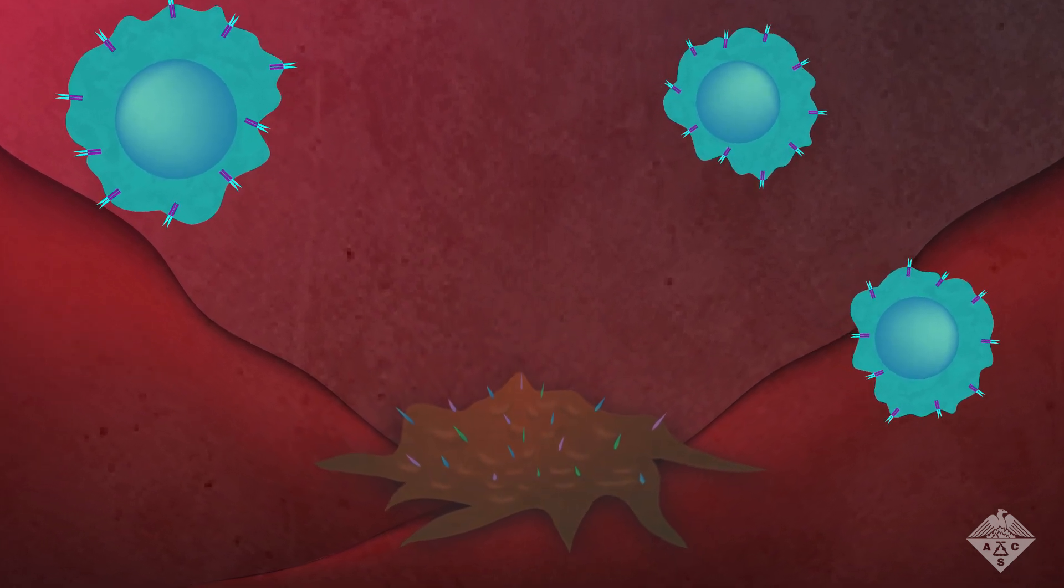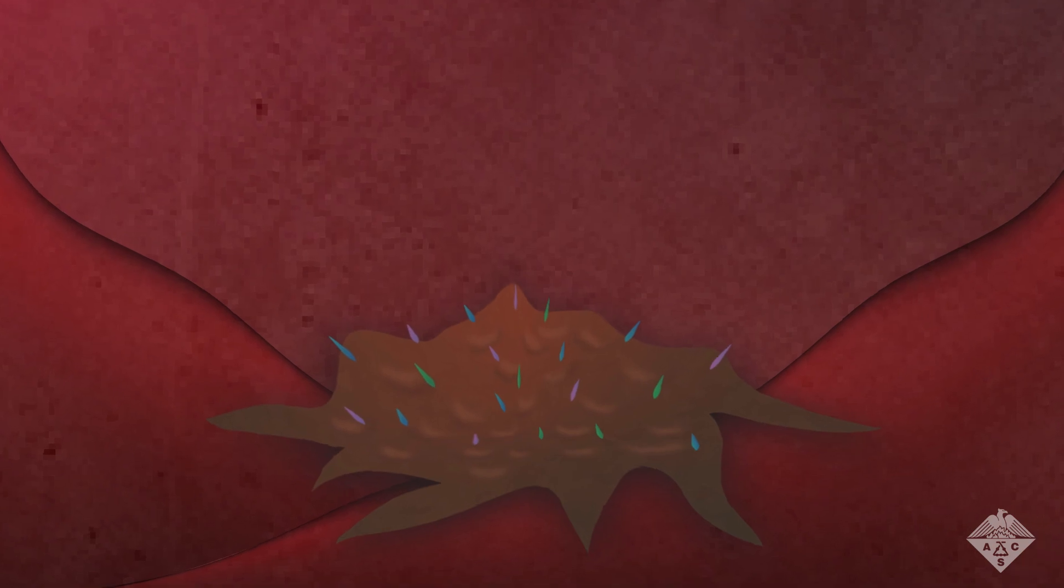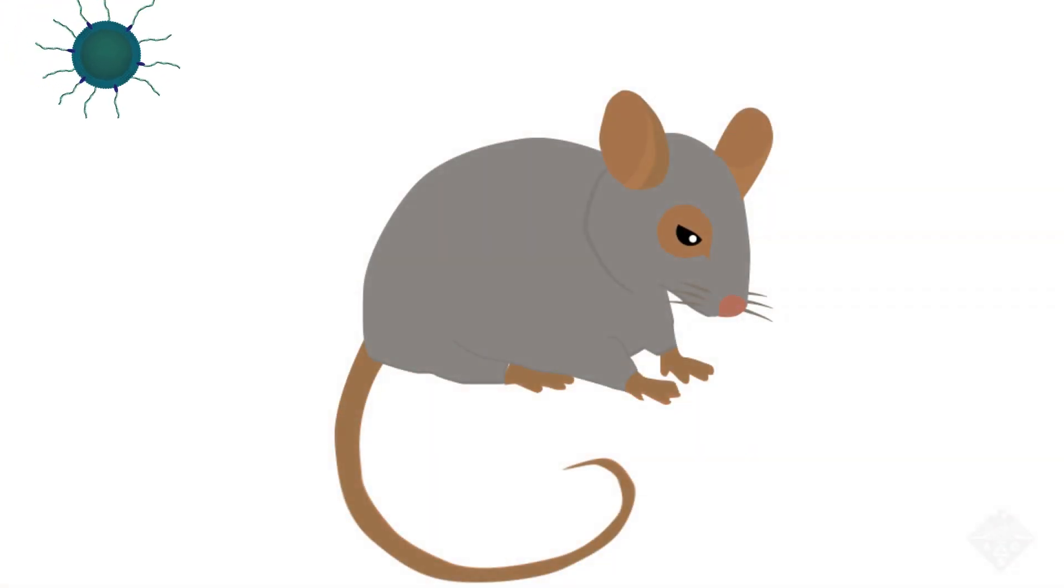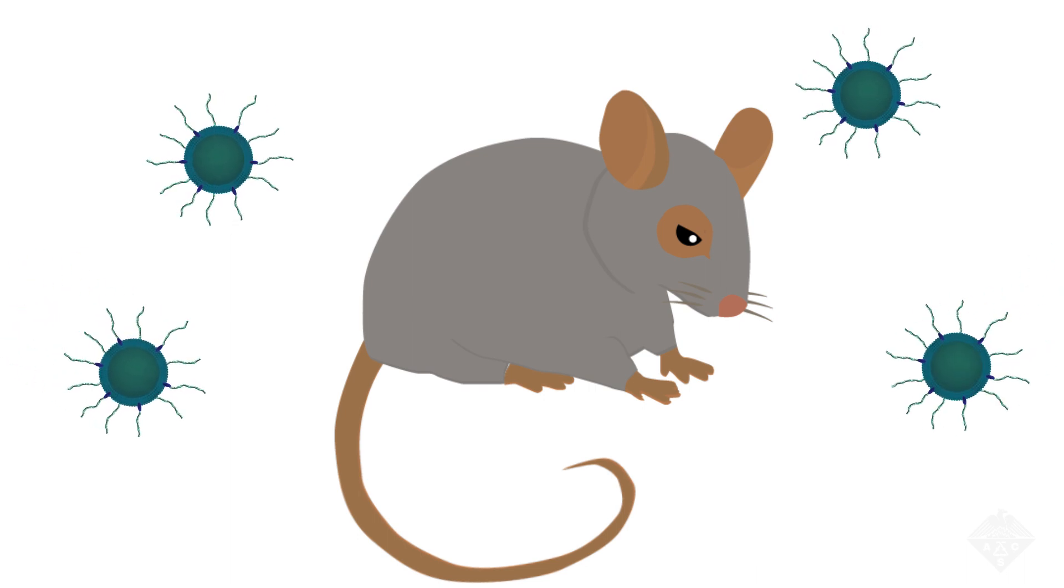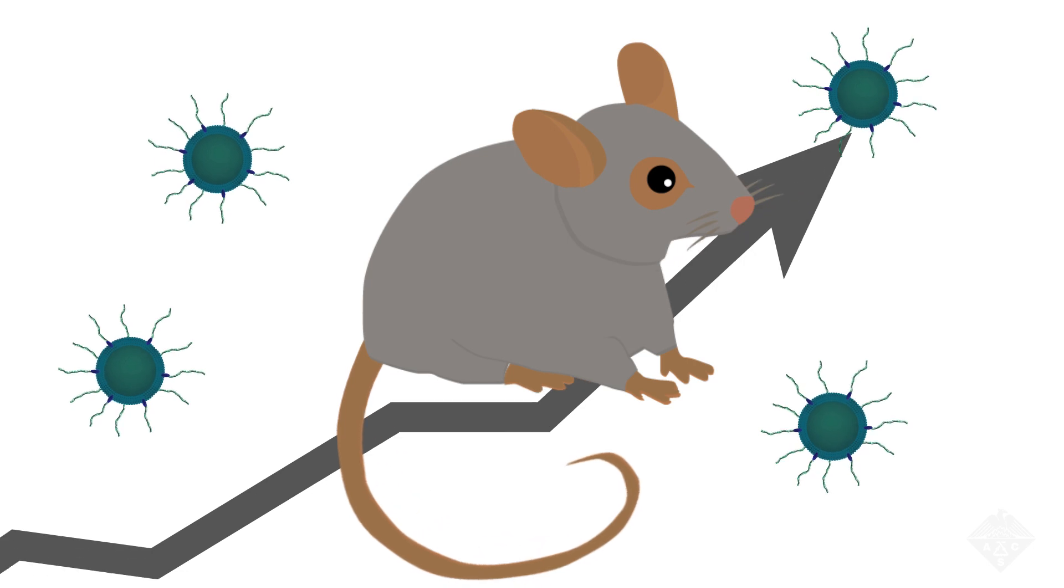But not all cancers are vulnerable to this approach, including triple-negative breast cancer. Now, researchers in the Merkin and Horuchi groups at Northwestern University have developed a new form of immunotherapy that extends survival in mice with this hard-to-treat form of cancer.